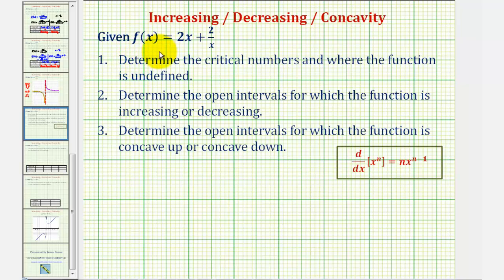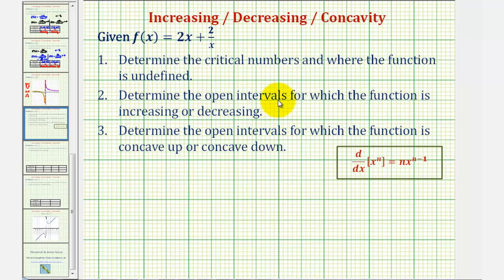We're given the function f(x) = (2x + 2) / x. Number one, we're going to determine the critical numbers and where the function is undefined. Number two, we're going to determine the open intervals for which the function is increasing or decreasing. And then, depending on which version of the video you're watching, we may also determine the open intervals for which the function is concave up or concave down.